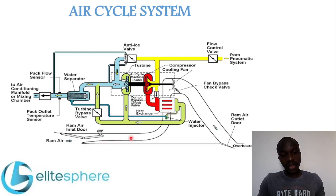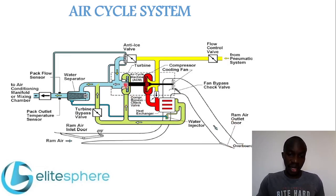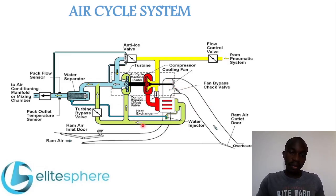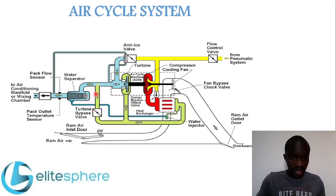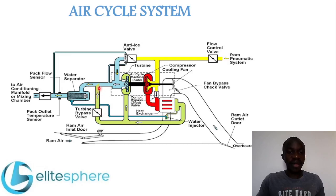From the heat exchanger, the air flows to the turbine of the air cycle machine. As shown, the turbine and compressor are mounted on one shaft, along with the cooling fan in the ram air duct. At the turbine, the air is further cooled and the energy to drive the compressor is extracted. From the turbine, the air goes to the water separator. There is a turbine bypass valve here — some air is bypassed and does not go through the turbine, and this air is mixed with cold air from the turbine.